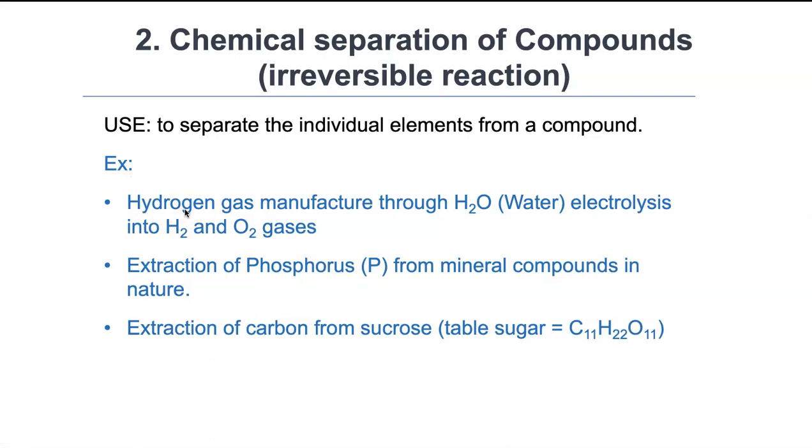Examples of this: this is a way of making hydrogen fuel cells very cheaply, but it's hard to do. Hydrogen gas can be made out of water. You put two electrodes, a cathode and an anode, and an electrical circuit, and then you can get H2 gas and O2 gases in the two separate electrodes and you can collect them. Another one is extraction of phosphorus for fertilizer, for example, using mineral compounds in nature.